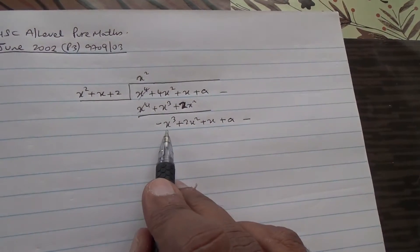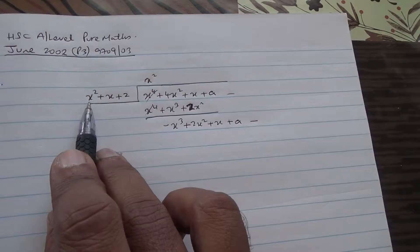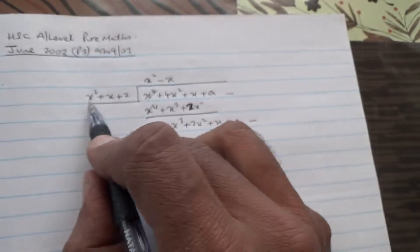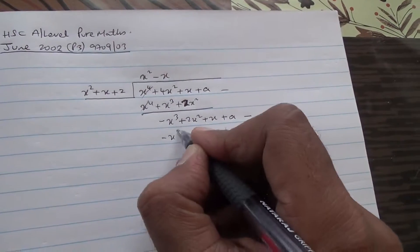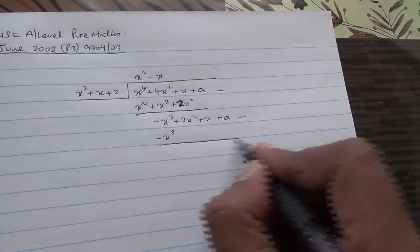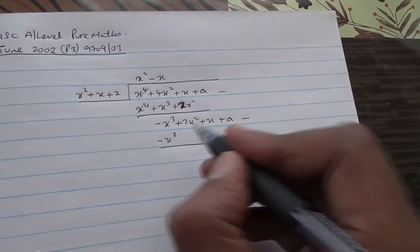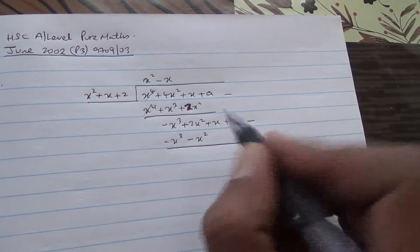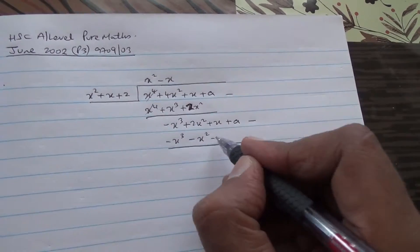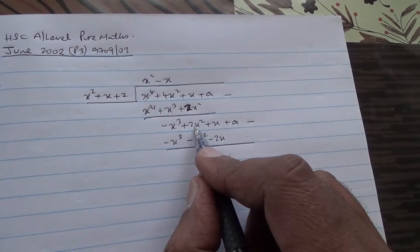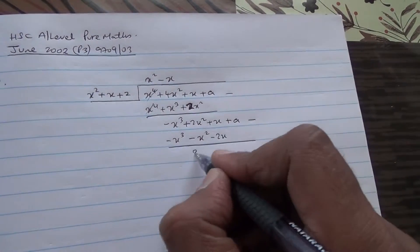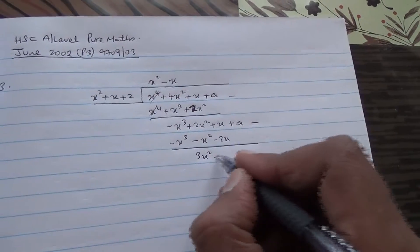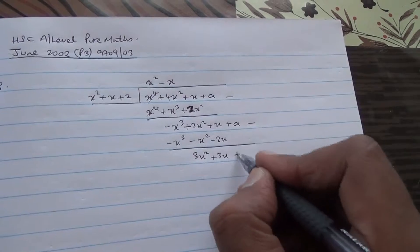So minus x cube divided by x squared is going to give us minus x. Minus x times x squared is minus x cube. Minus x times x is minus x squared. Minus x times 2 is minus 2x. 2x squared minus minus x is 3x squared. x minus minus 2x is plus 3x. A minus nothing is a.